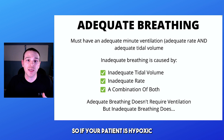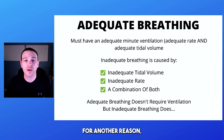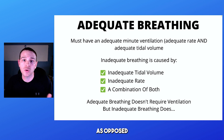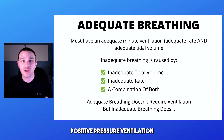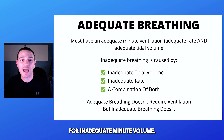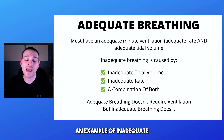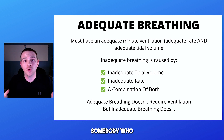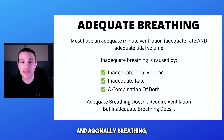If your patient is hypoxic for another reason, we can apply oxygen as opposed to providing positive pressure ventilations for inadequate minute volume. An example of inadequate breathing would be an opiate overdose — somebody who we find unconscious and agonally breathing.